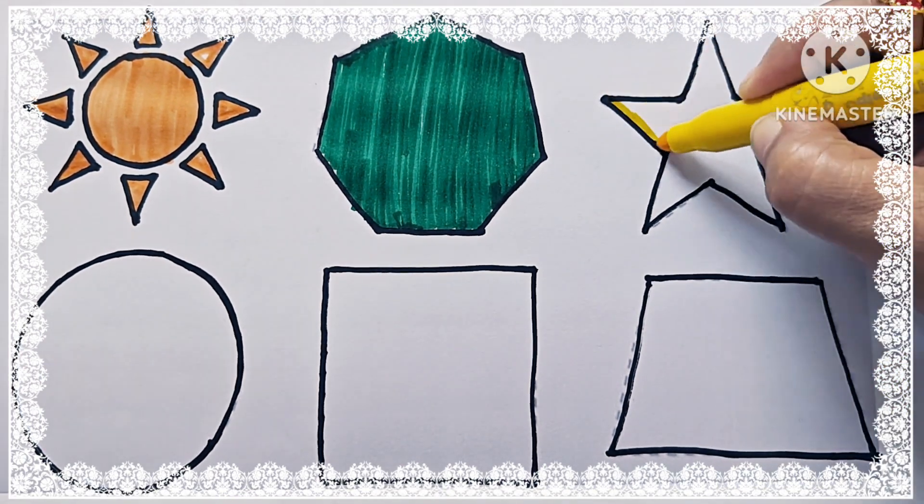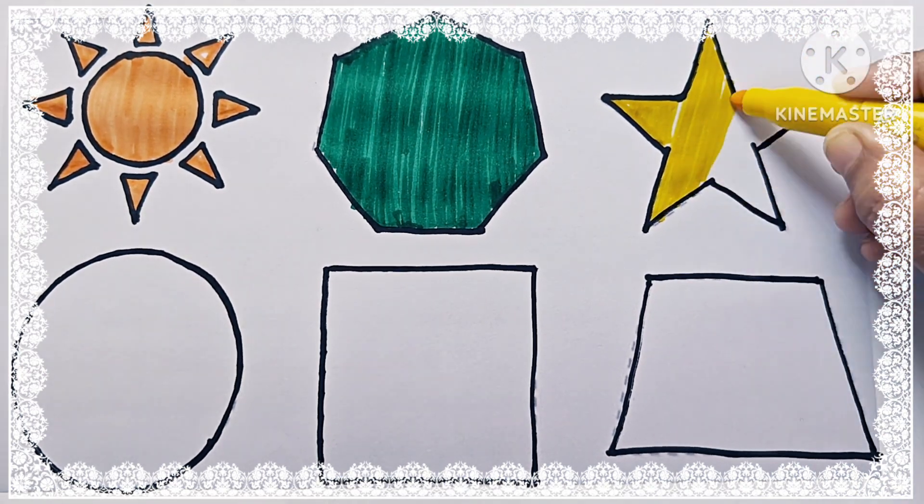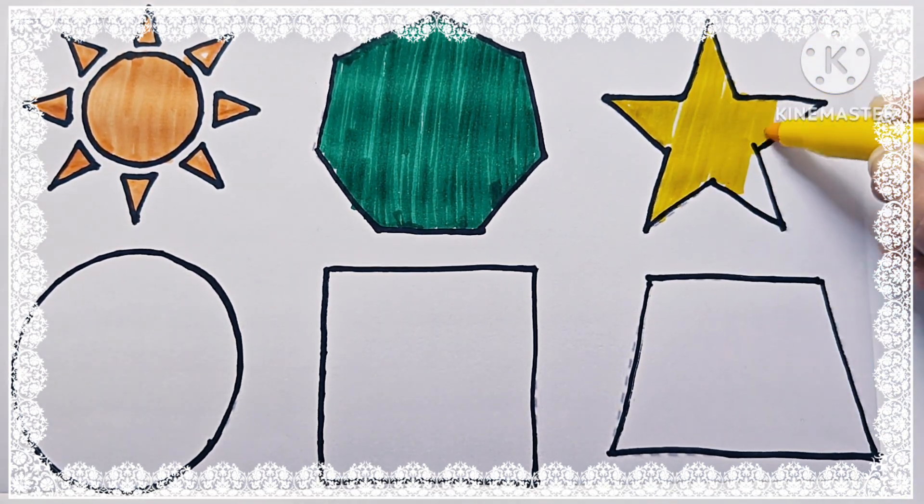Now this is yellow color. And the shape is star. It has 5 points.